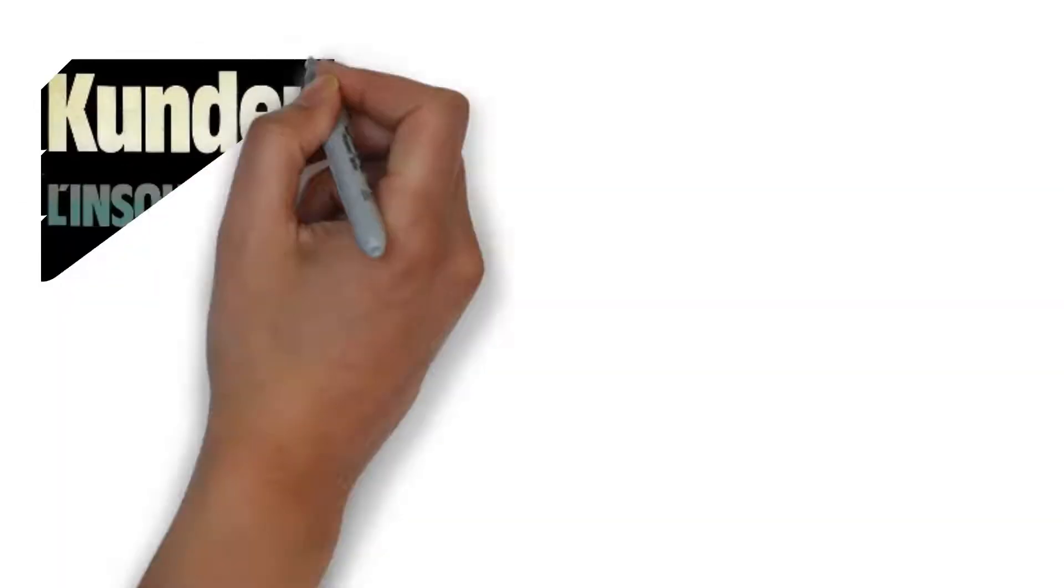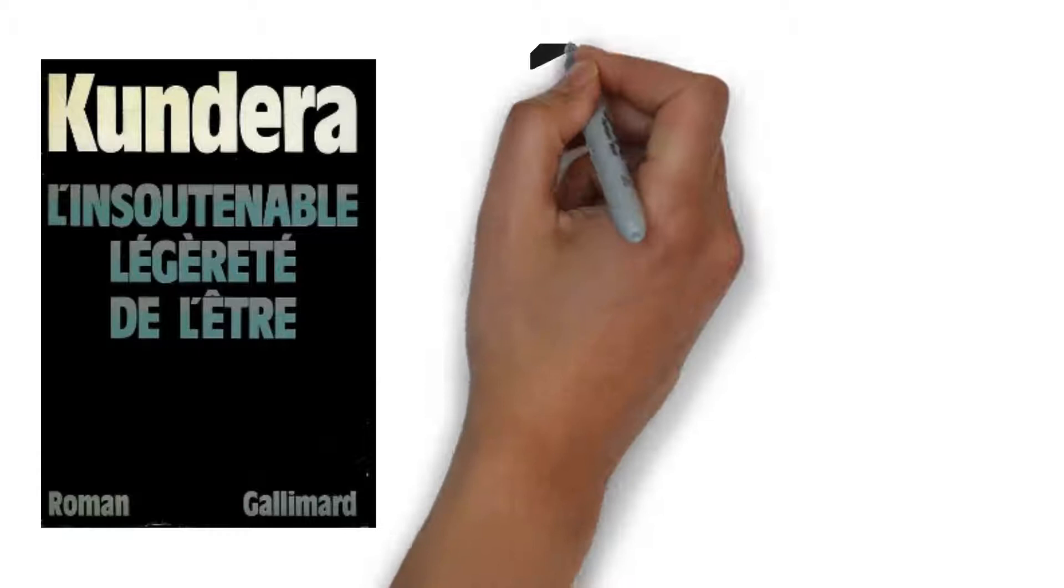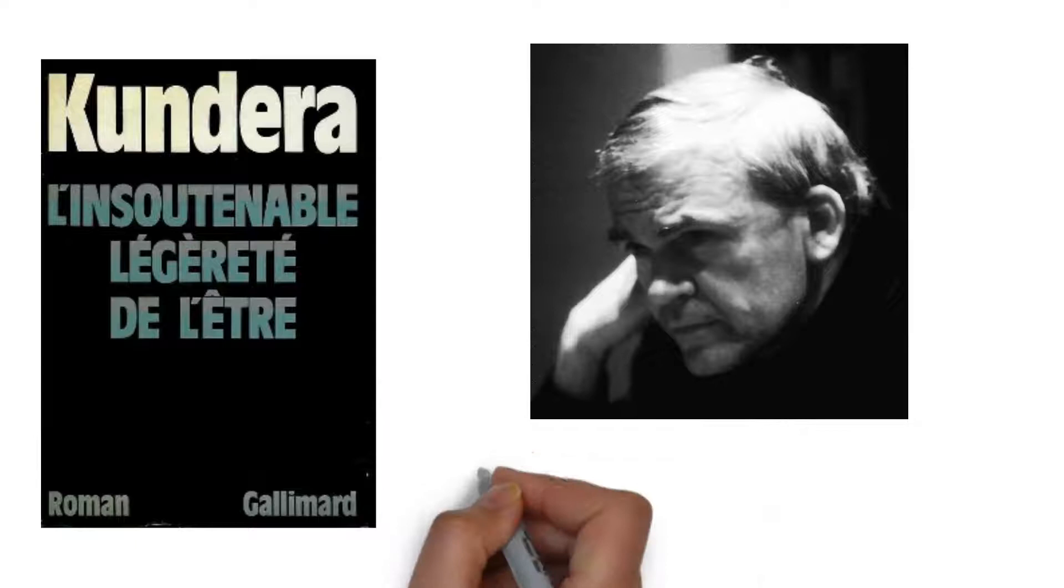The Unbearable Lightness of Being is a 1984 novel by Milan Kundera, about two women, two men, a dog and their lives in the 1968 Prague Spring period of Czechoslovak history.